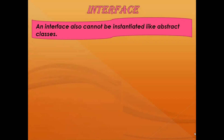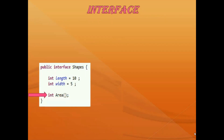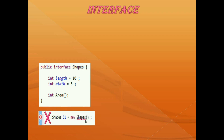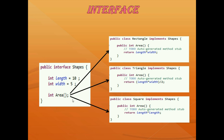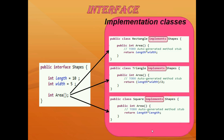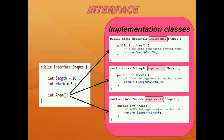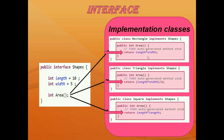Interface also cannot be instantiated like abstract classes. Since an interface contains only abstract methods, meaning incomplete methods, it is not possible to create an object to an interface. The classes that implement an interface are called implementation classes. Interface is more useful when compared to abstract classes because every implementation class can have its own implementation of the abstract methods.